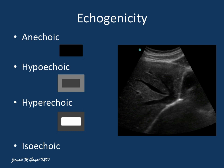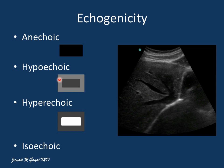The tissues are said to be anechoic when there are no echoes coming from the tissues and the tissues will look dark. The tissue is called hypoechoic when the appearance of the tissue is darker, meaning it has less echoes as compared to the surrounding tissues.